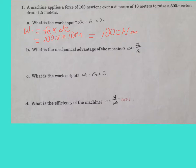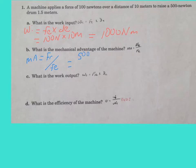For part B, what is the mechanical advantage of the machine? Mechanical advantage equals the resistant force divided by the effort force. We have a resistant force of 500 newtons and an effort force of 100 newtons, giving us a mechanical advantage of 5.